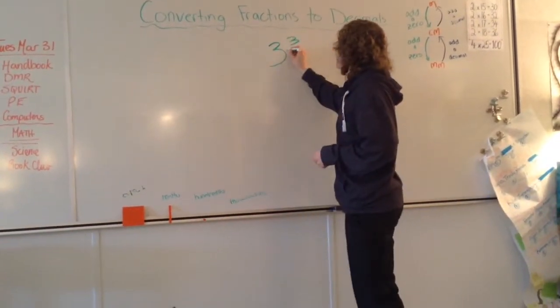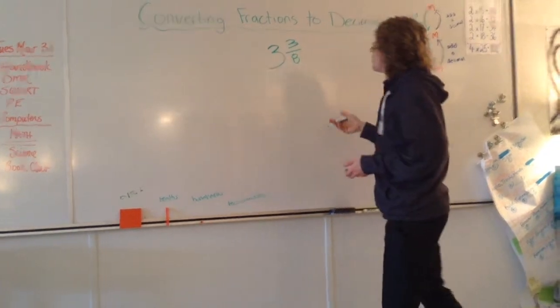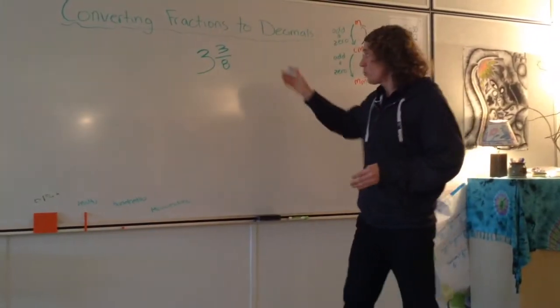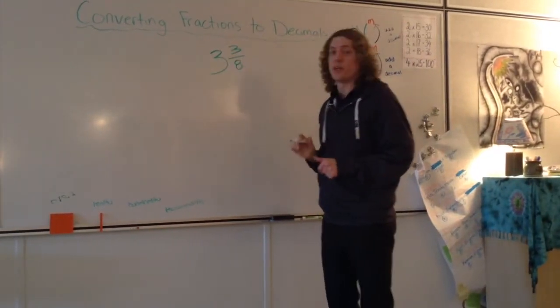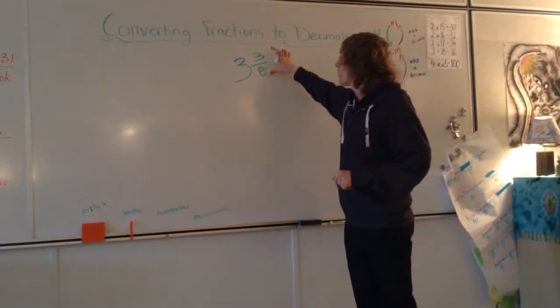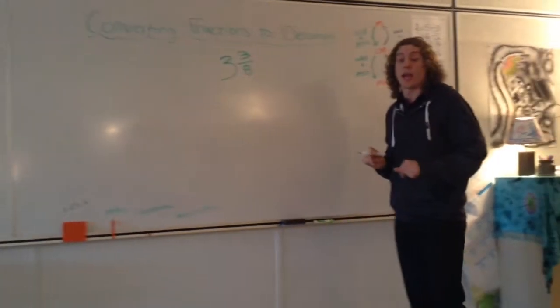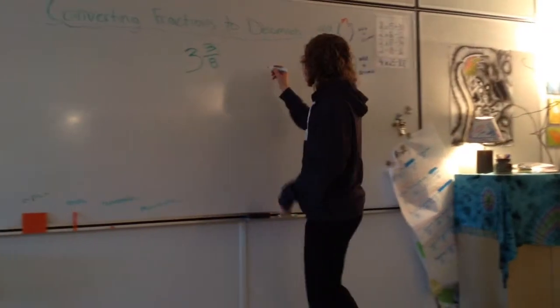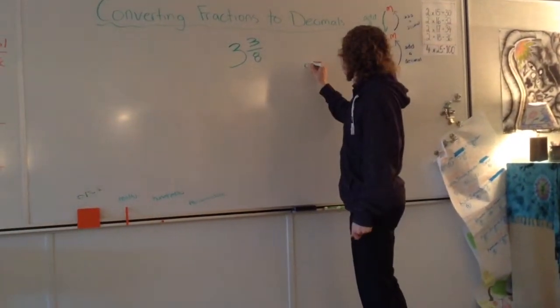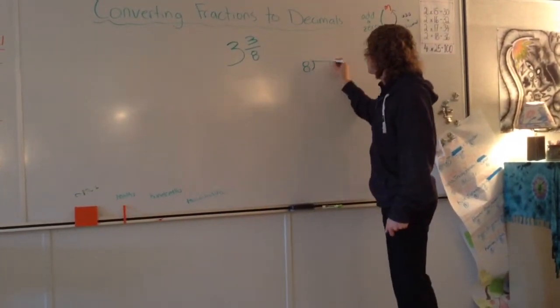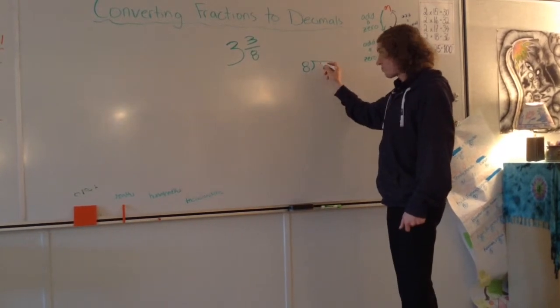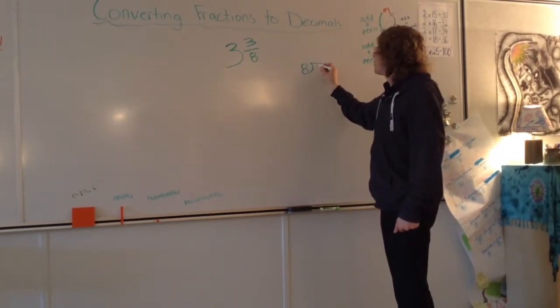So we have 3 and 3/8, for example. That's a mixed number. We're going to actually keep the 3 by itself and we're going to try and figure out what this 3/8 is as a decimal. So to do that, you'll take your denominator and you'll put it on the outside of the division symbol and you'll put the 3 on...